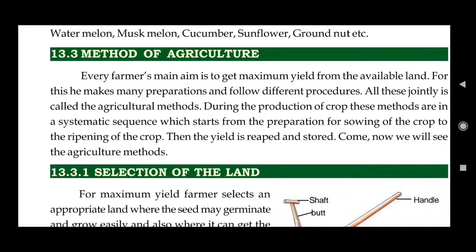Every farmer wants to know how to cultivate more crops in his land to get more profit. Yield means crops. For this, he makes many preparations and follows different procedures. All these jointly are called the agriculture method — the various steps or processes that a farmer adopts or applies for maximum cultivation of crops or maximum yield from the land.